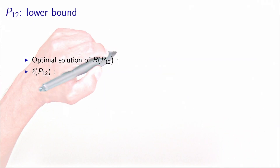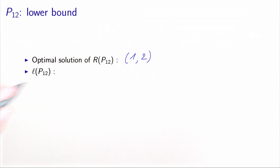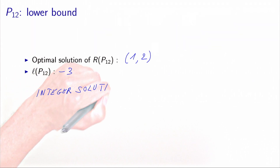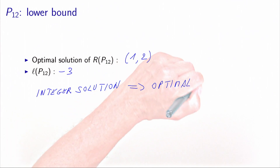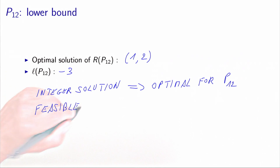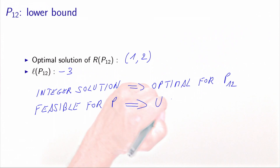To summarize: the optimal solution of P12 is (1, 2) with a lower bound of minus 3. Since this is an integer solution, it is optimal for P12 and also feasible for the original problem P. This means we have found a better upper bound — the upper bound was zero, and now we update it to minus 3.